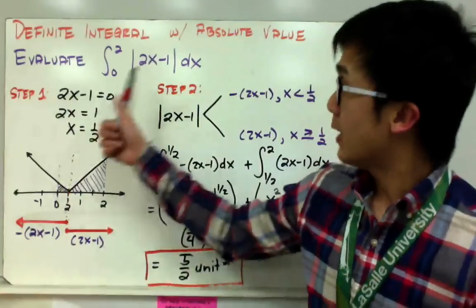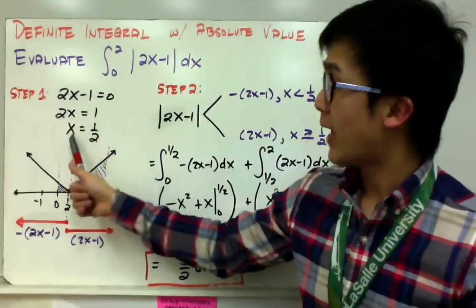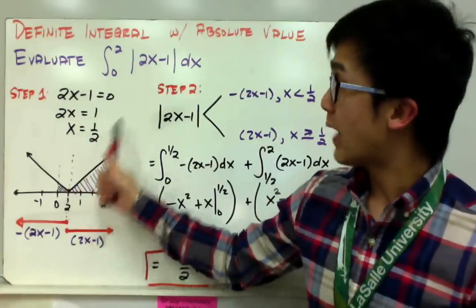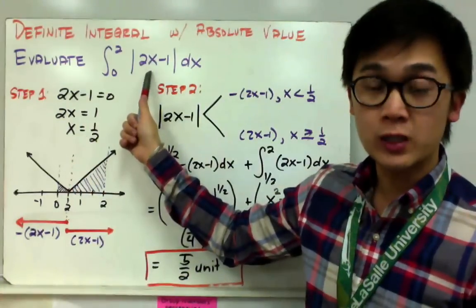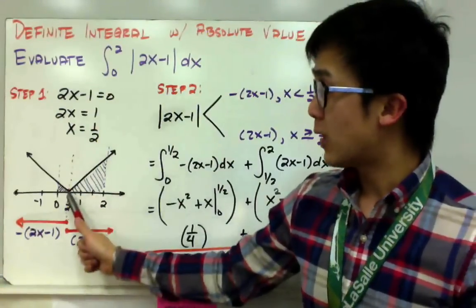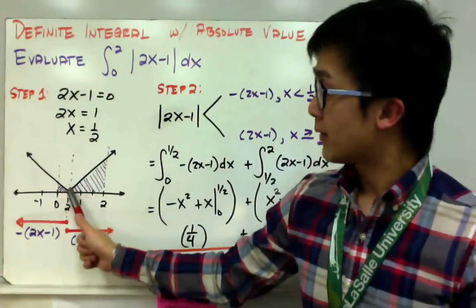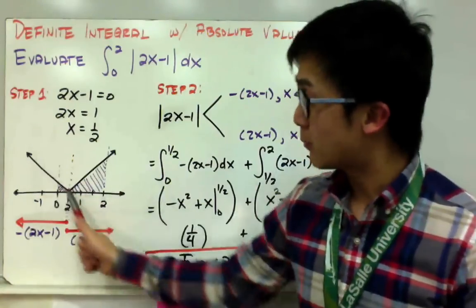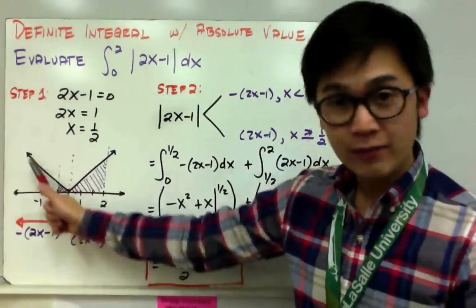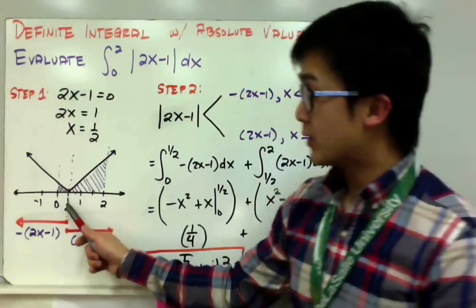In our first step, 2x minus 1 has an x-intercept of x equal to 1/2. To do that, all you have to do is set 2x minus 1 equal to 0 and solve for x. The x-intercept is right here, and we know that the graph of an absolute value is similar to a V-shape, wherein our x-intercept is at 1/2.